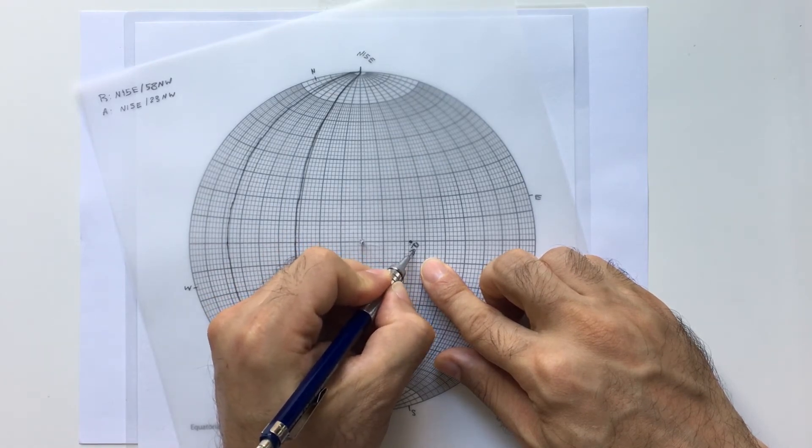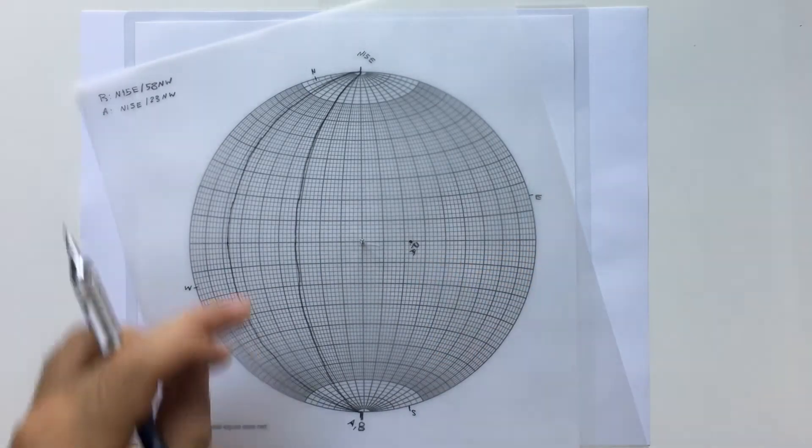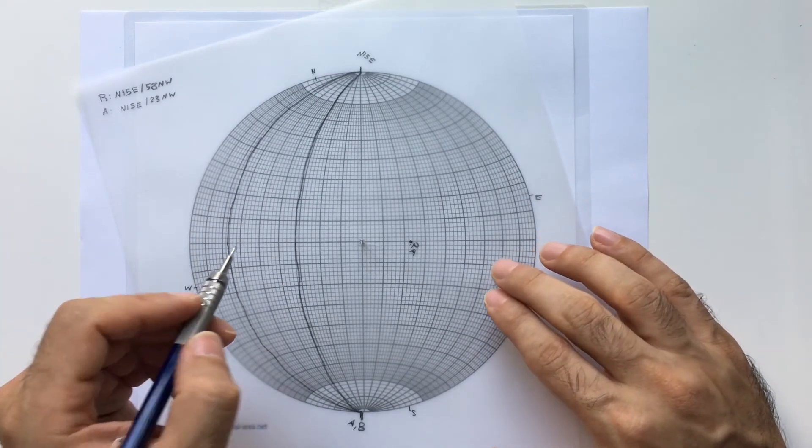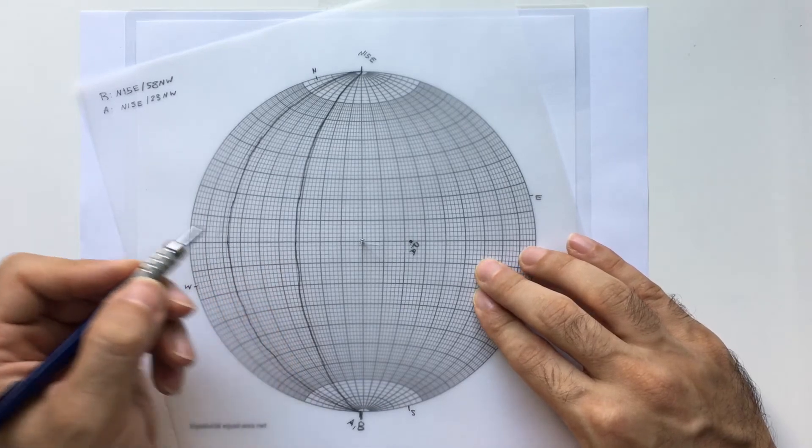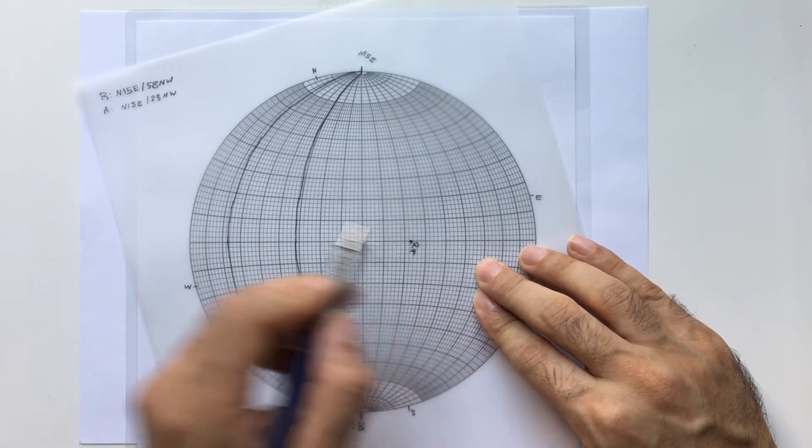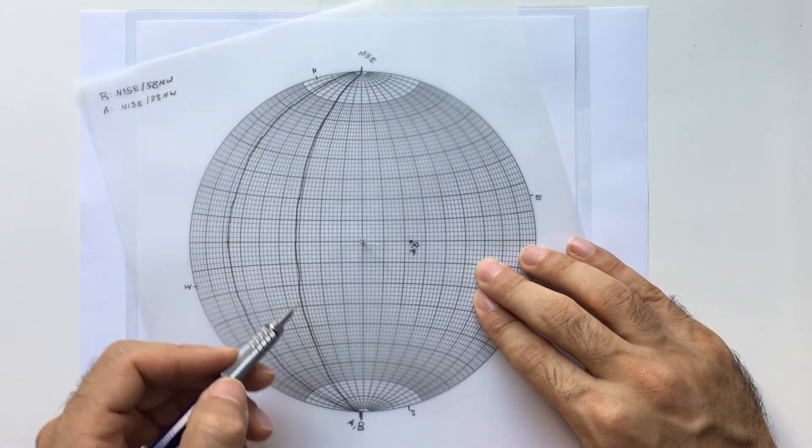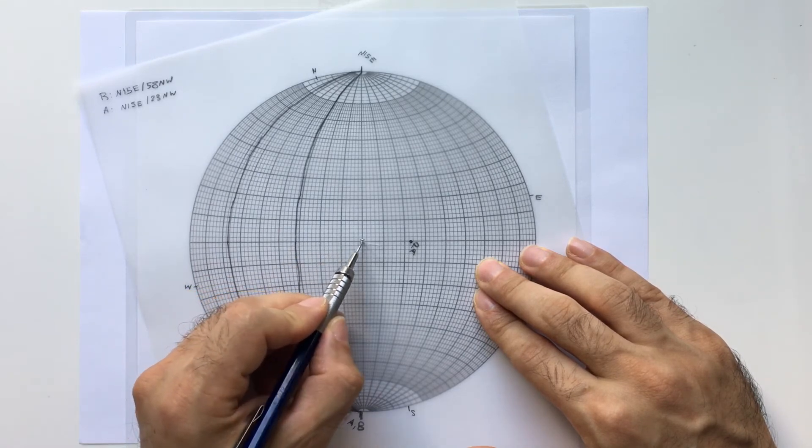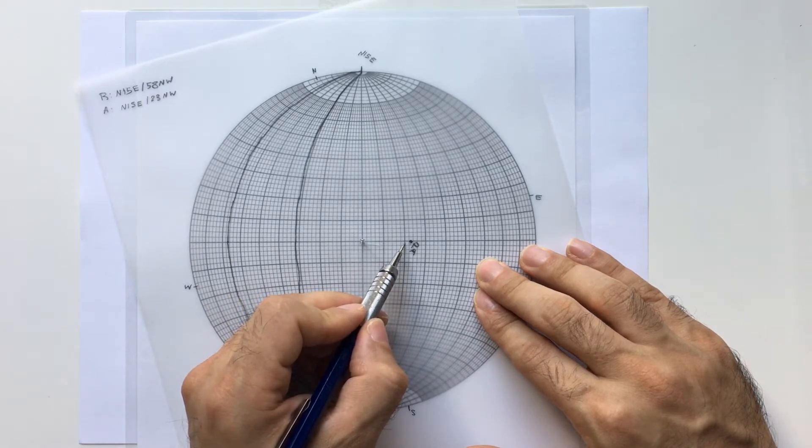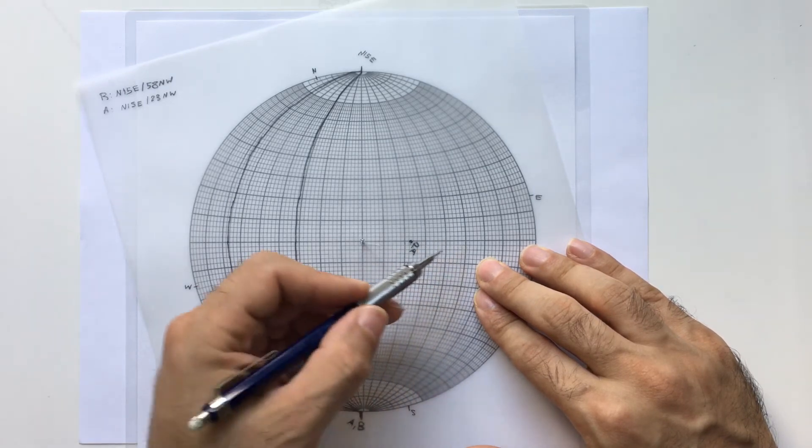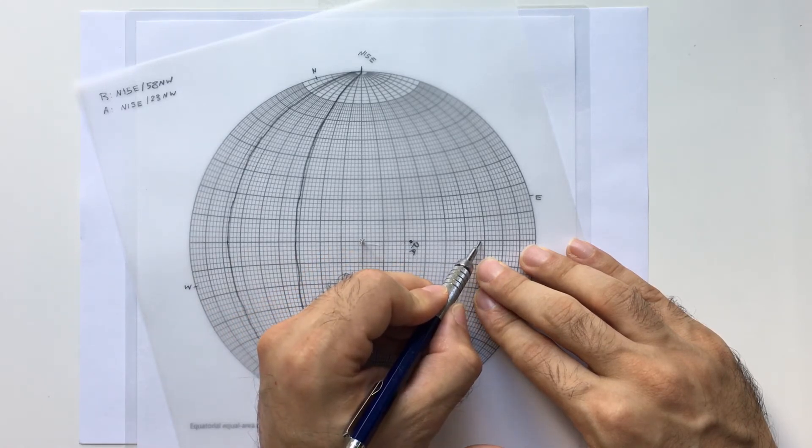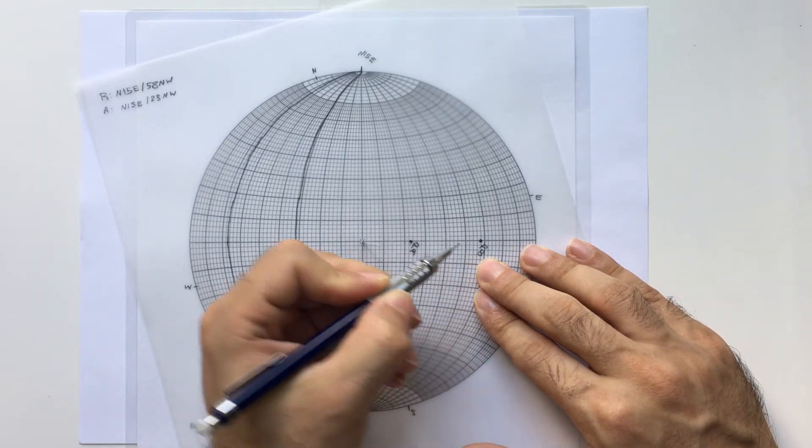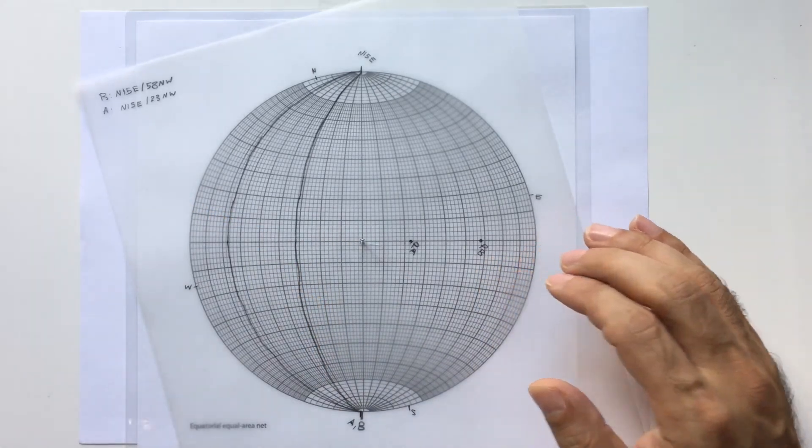The other one, since both of them have the same strike, I can keep my tracing paper as it is and I should count 58 degrees off from the center, or I can count 90 degrees off from the great circle. This is 2, 12, 22, 32, 42, 52, 62, 72, 82, and this is 92. Two degrees back. This is P for the units, the pole of the units below the unconformity. So I have my poles and the traces.